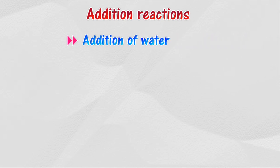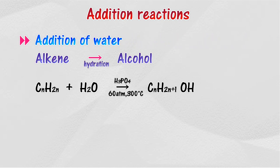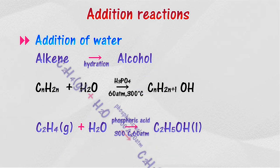Alkenes react with water in the presence of a strong acid or catalyst to form alcohol. In this reaction, a mixture of alkene gas and steam (H2O) is flowed over a phosphoric acid catalyst at a temperature of 300 degrees Celsius and a pressure of 60 atmospheres.